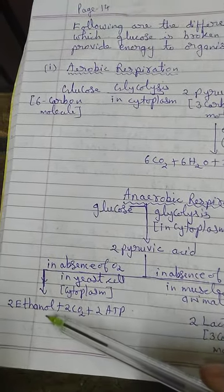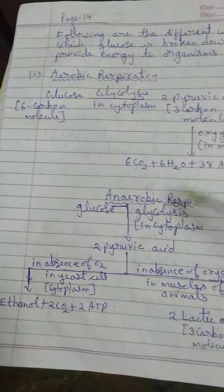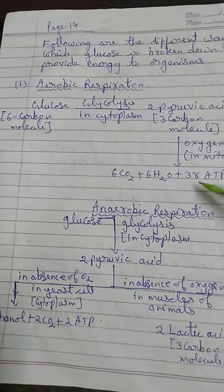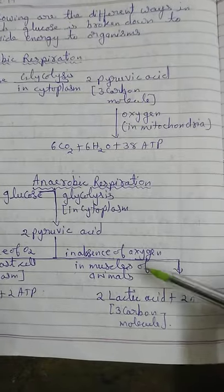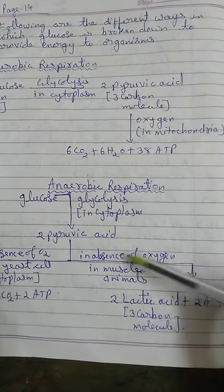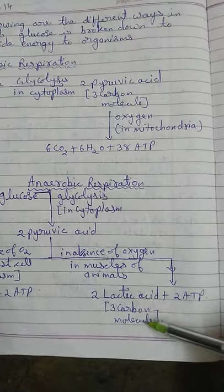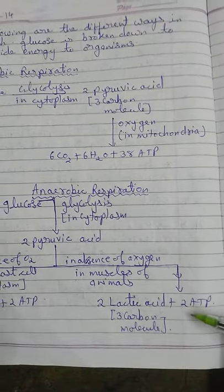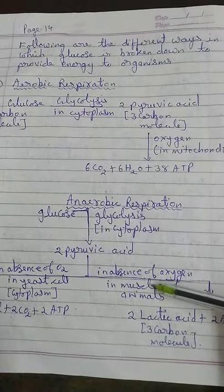In yeast cells, the end products are ethanol, carbon dioxide, and ATP. In aerobic respiration, the end products are carbon dioxide, water, and ATP. In muscle cells under absence of oxygen, the pyruvic acid is broken down into lactic acid — also a three-carbon molecule — forming two lactic acid molecules, with energy stored in only 2 ATP molecules.